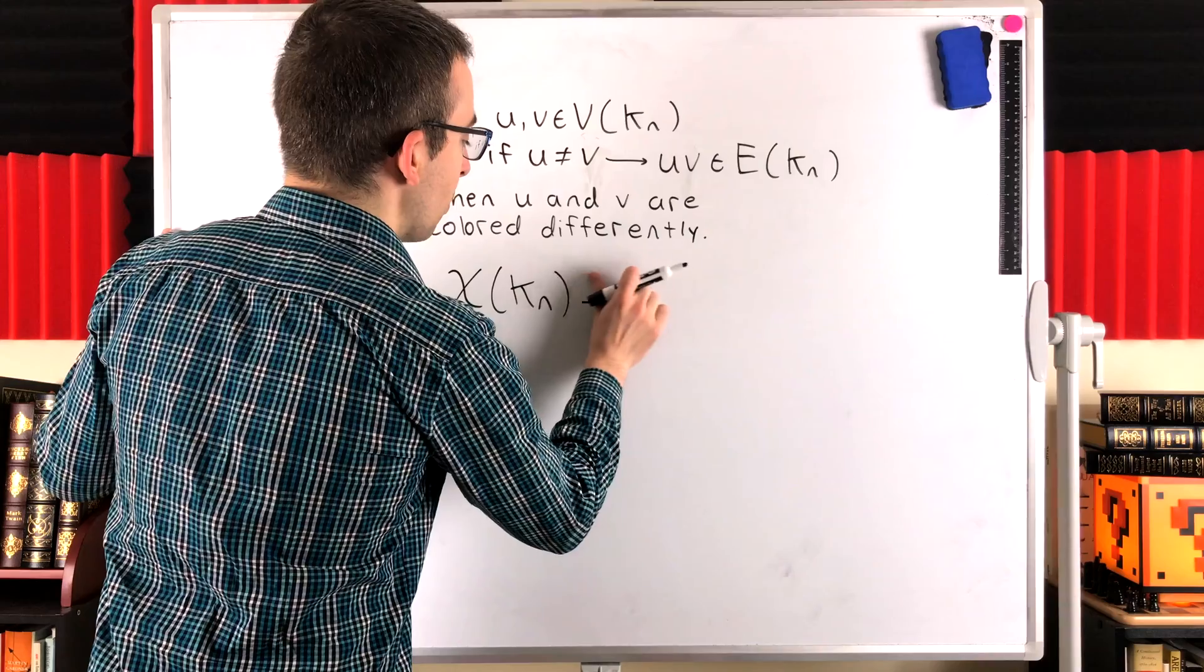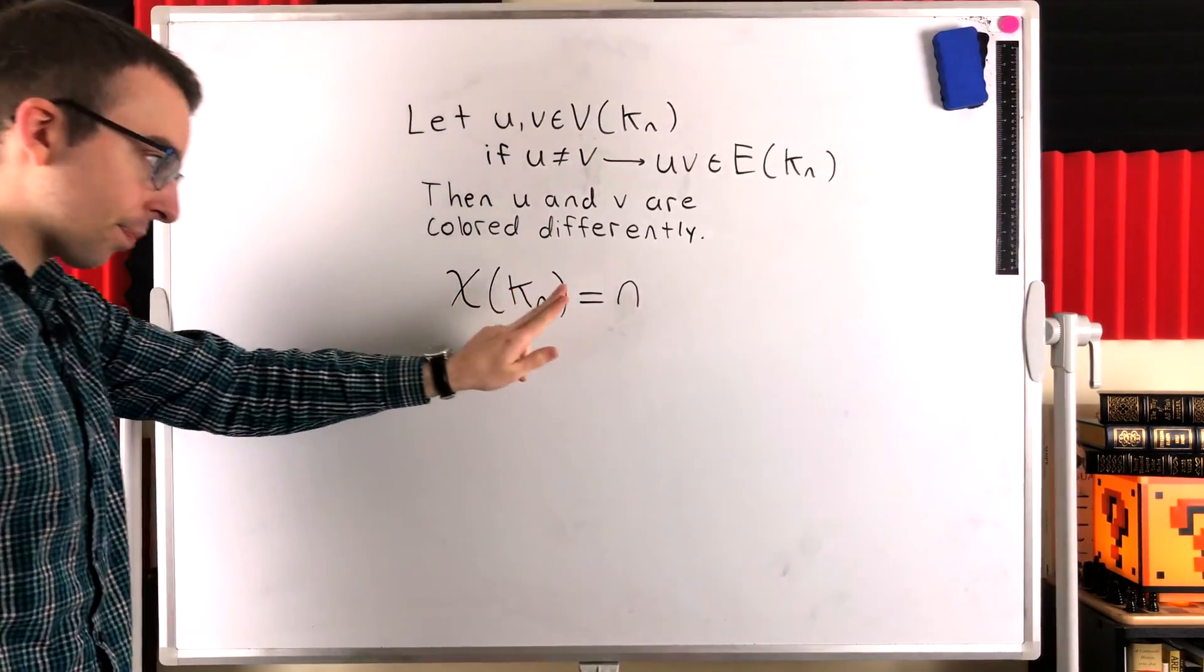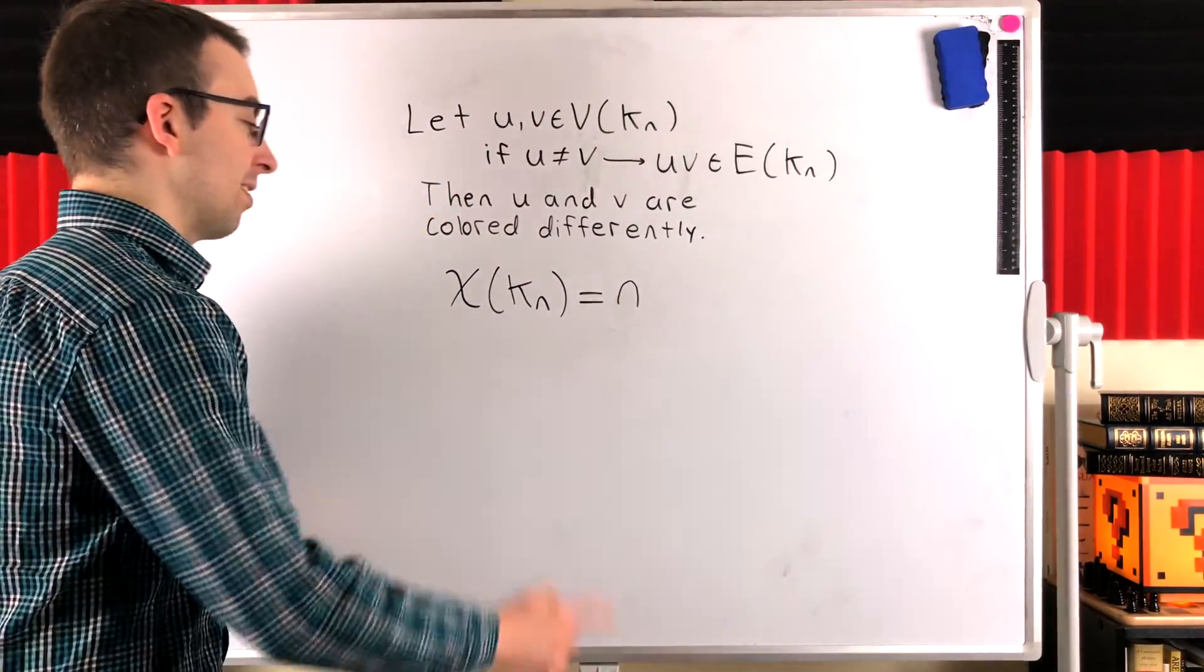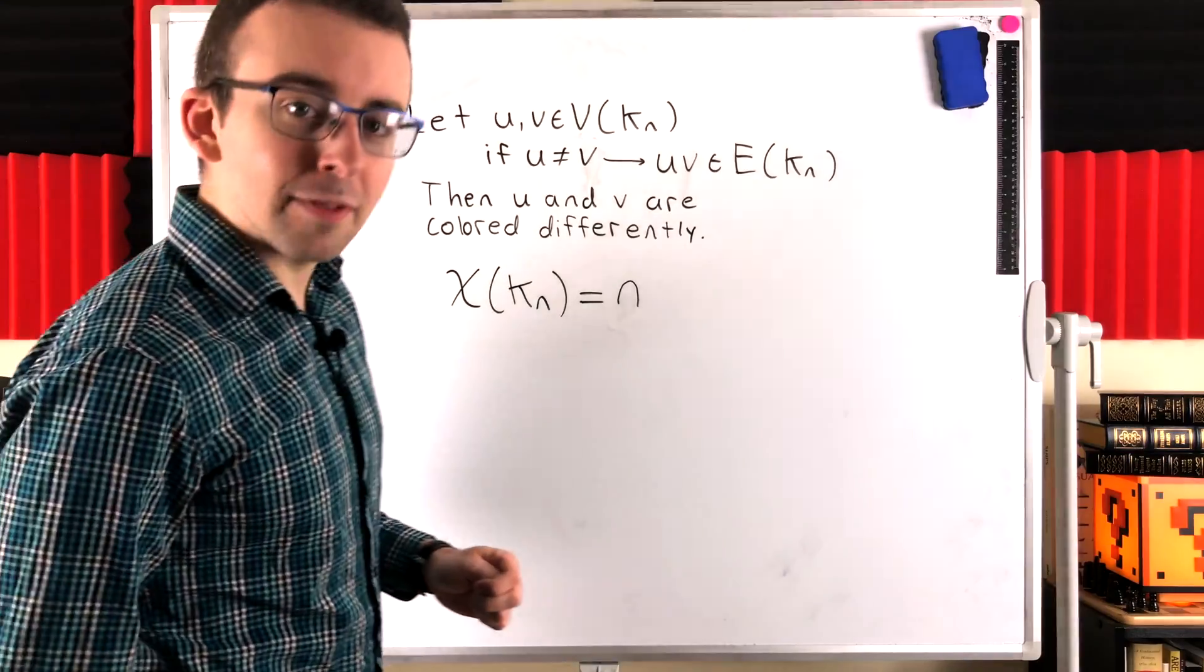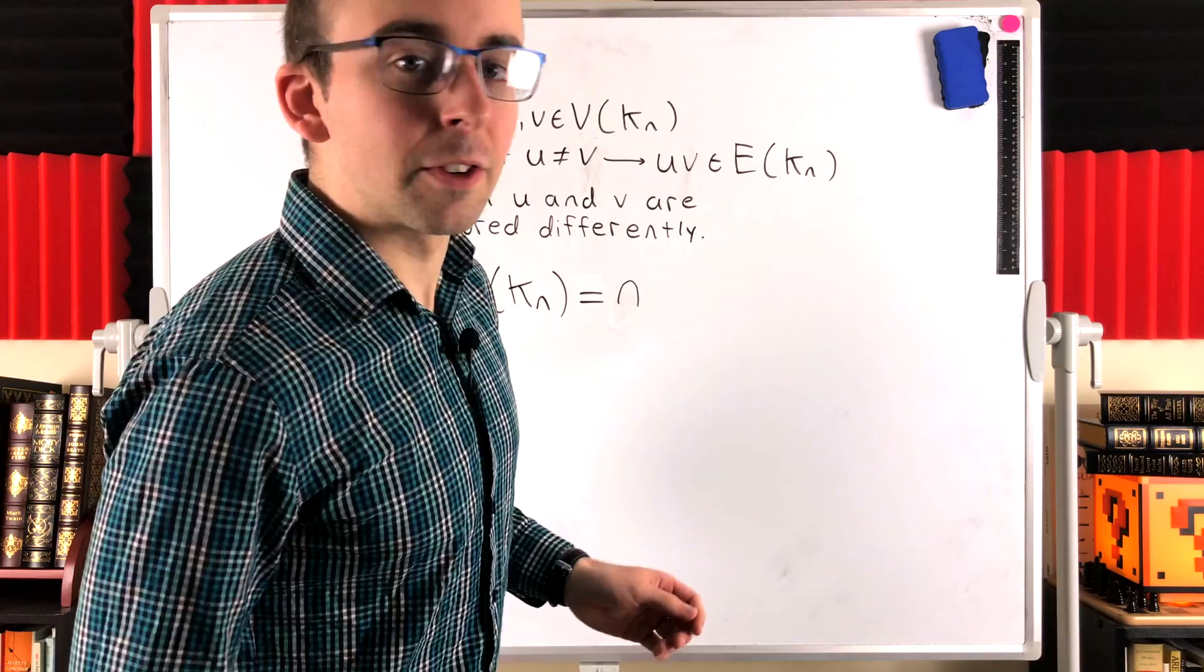And so in total, we can conclude that the chromatic number of the complete graph on n vertices, KN, is equal to n. That's the minimum number of colors necessary to color a complete graph on n vertices, because all the vertices are adjacent, so they all got to be colored differently.